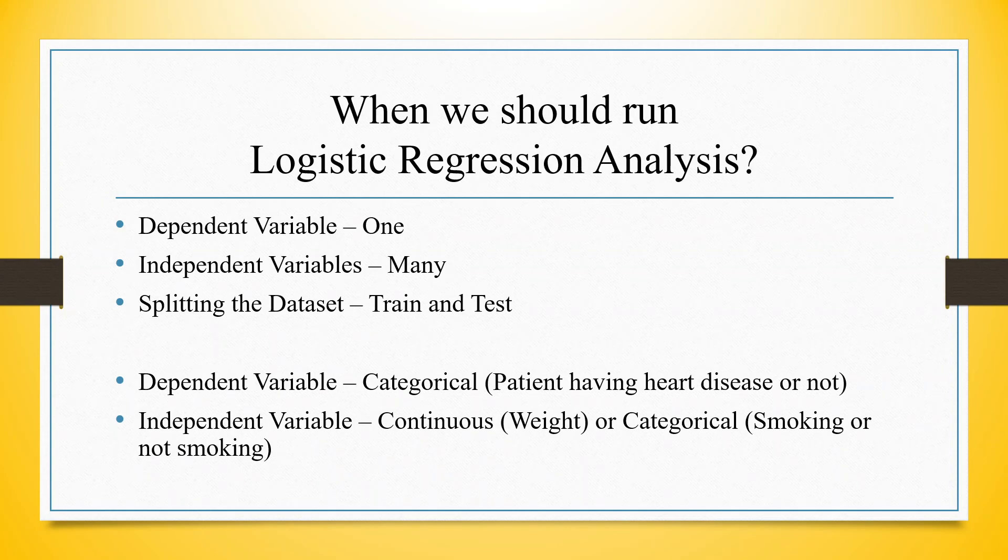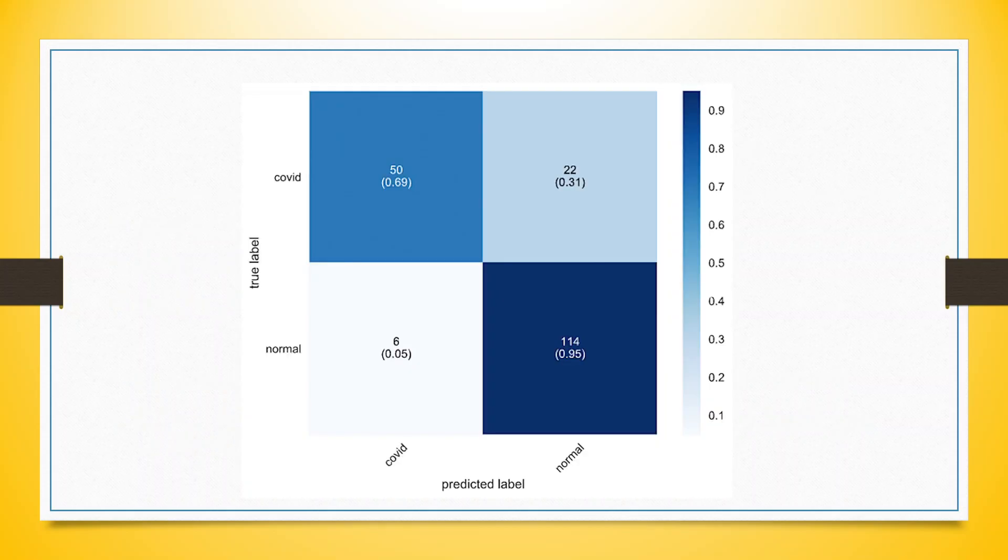We use logistic regression when we have one categorical dependent variable and there can be many independent variables. These independent variables can be on continuous or categorical scale, but it is necessary that the dependent variable should be in the categorical scale. For example, a patient having heart disease or not having heart disease.